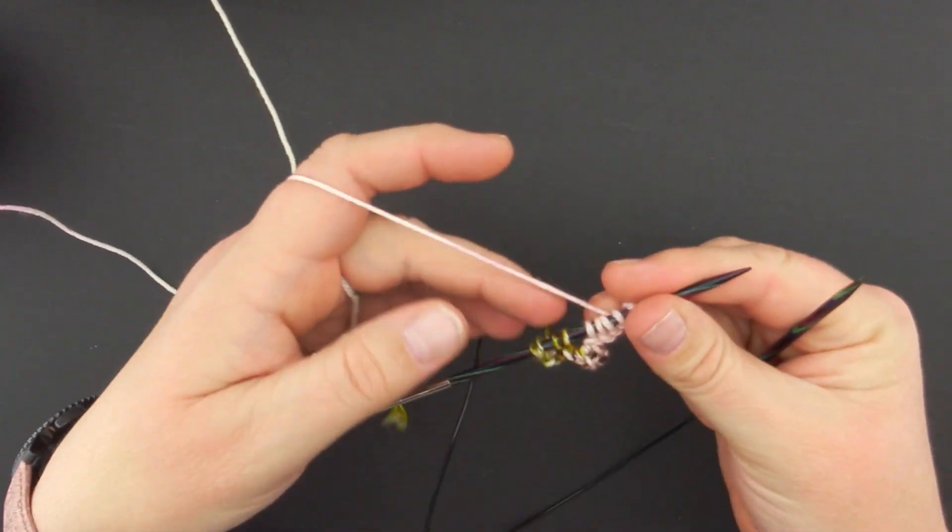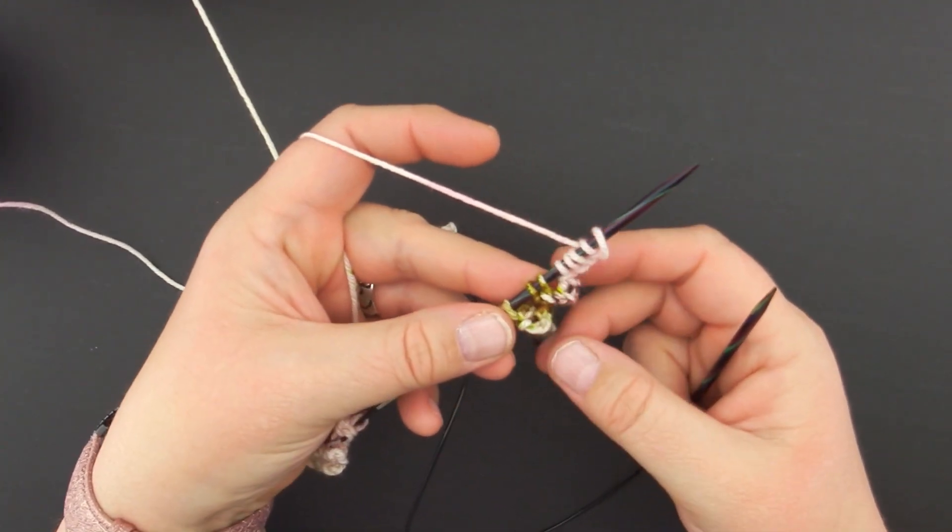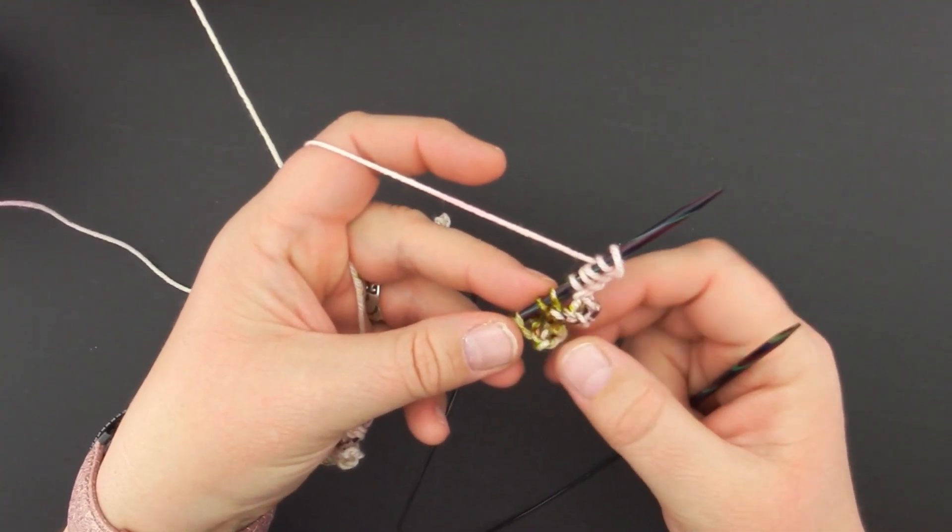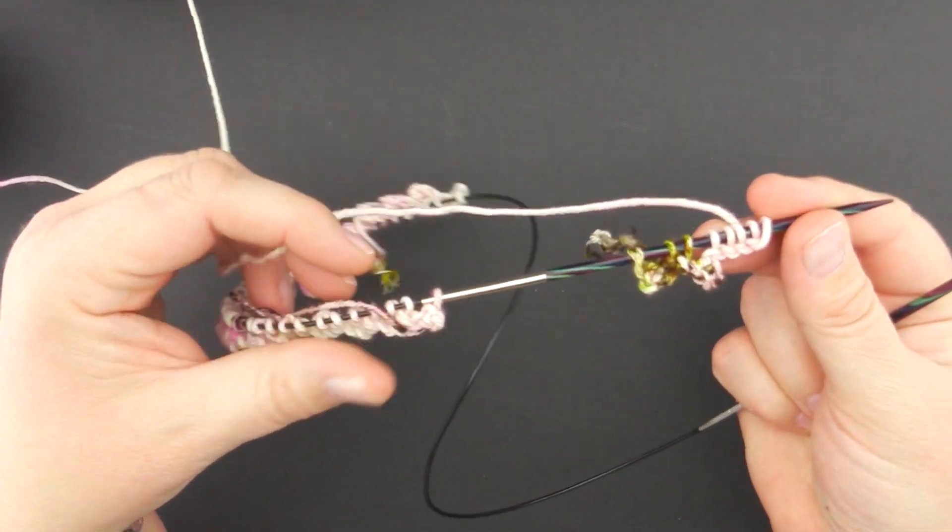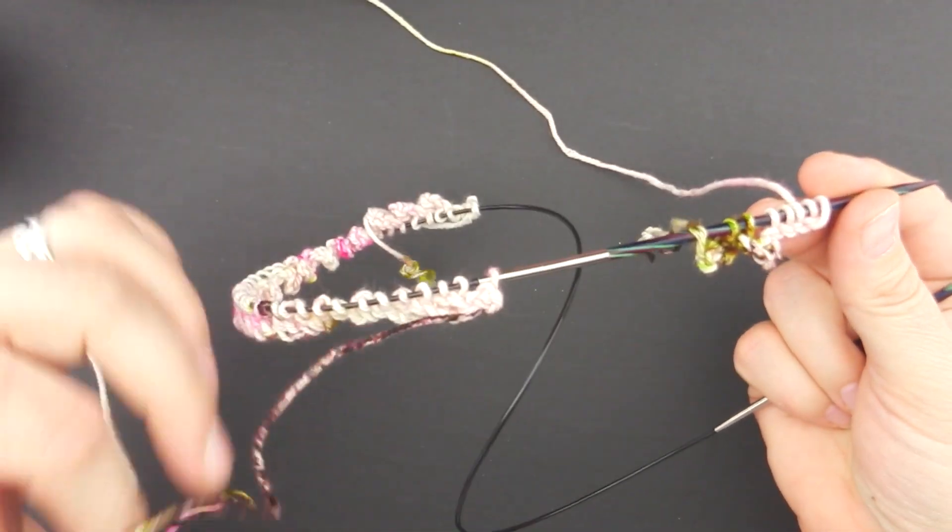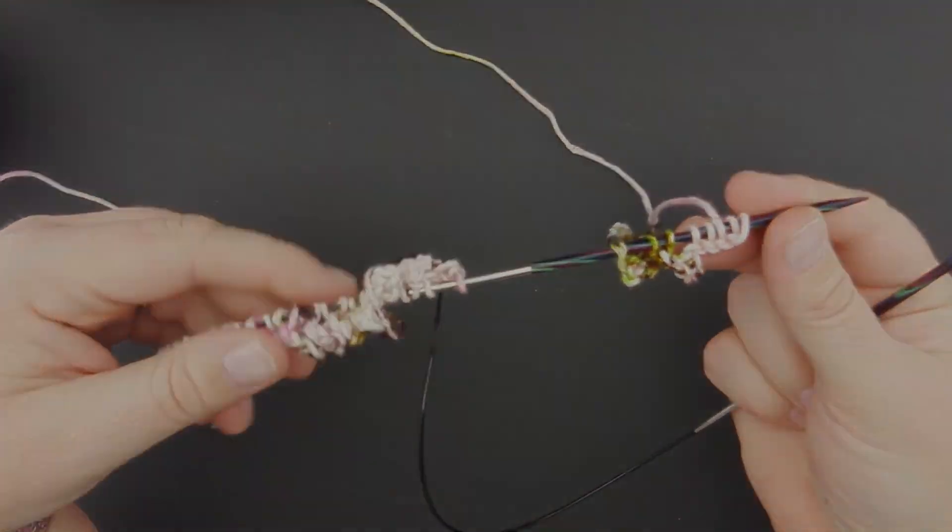All right, I'll go ahead and keep working this cast on until I have 21 more picots and 42 stitches, and then we'll talk about how we join in the round for these to be worked two at a time.